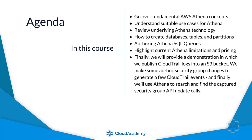We'll examine the process in which Athena SQL queries are authored. We'll review current Athena limitations and pricing. Finally, we'll provide a demonstration in which we publish CloudTrail logs into an S3 bucket. We make some ad-hoc security group changes to generate a few CloudTrail events, and we'll use Athena to search and find the captured security group API update calls.